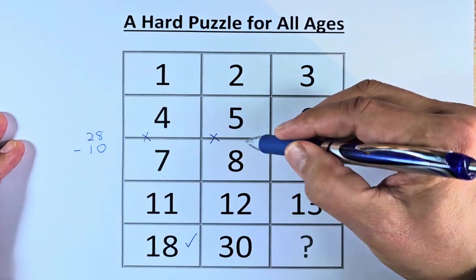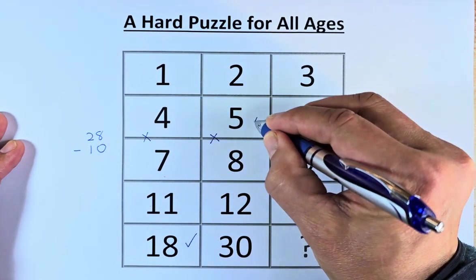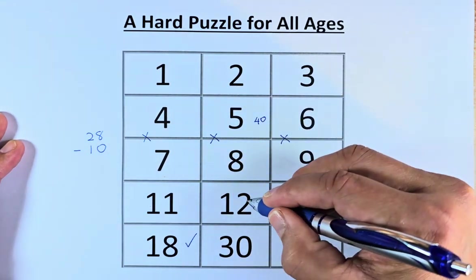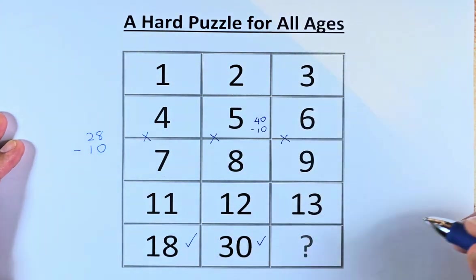Similarly, we're going to take the middle numbers and multiply them. 5 times 8 is going to be 40. And then you take 12 minus 2, which will also be 10. So 40 minus 10, that will give us 30.